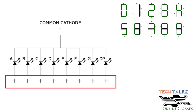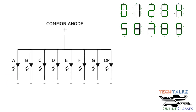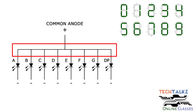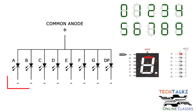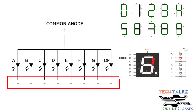In the common anode type, the anode of all LEDs are tied together as a single terminal, and the cathodes are left alone as individual input pins.